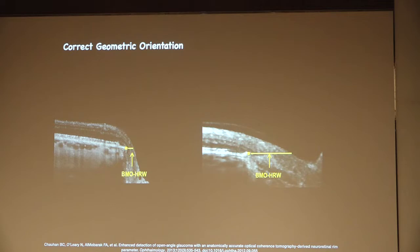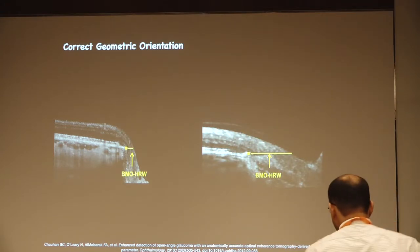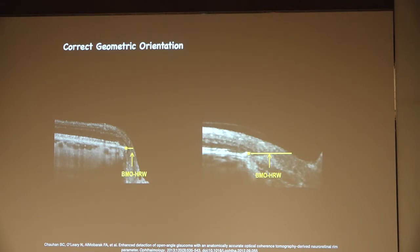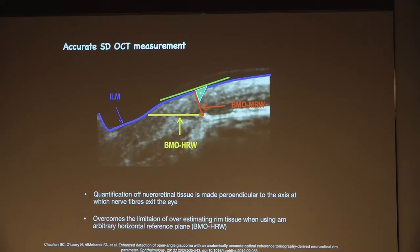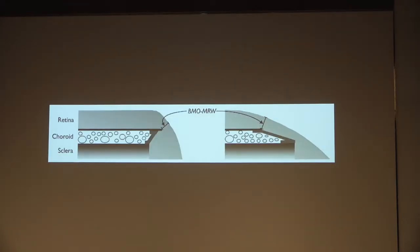Because the geometric orientation of the axons is not the same throughout the same eye — some fibers can dip down perpendicular, some can go parallel. If we take a BMO HRW and fix that particular position, you will be overestimating. As my mentor Dr. Satin says: imagine hair being tied into a bun. If you leave it loose, you think the margin is a little thicker, but when you tie it, the tie will be perpendicular to the axons — that will be the exact thickness of the neuroretinal rim. So we have BMO MRW, which measures the perpendicular distance from the internal limiting membrane — the actual thickness of the neurofibers — taking care of the geometric orientation.